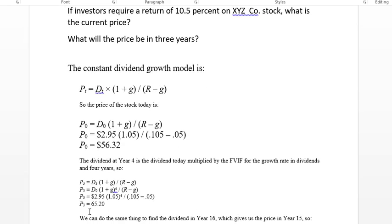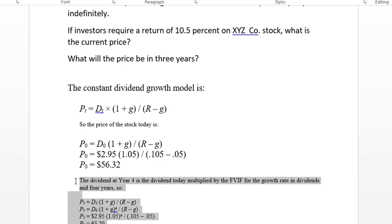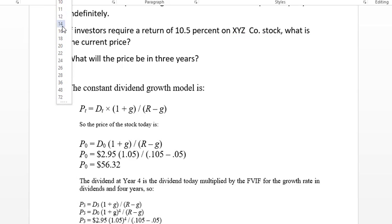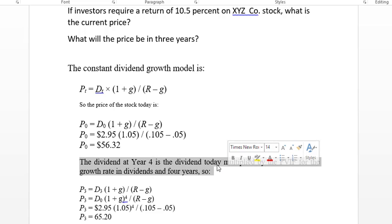Now, the next piece is we are looking to do this for a three-year time period. So we have the numbers. So we know what P3 is. The dividend at Year 4 is the dividend today multiplied by the FVIF for the growth rate in dividends in four years.